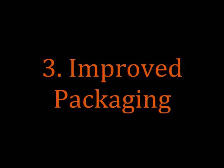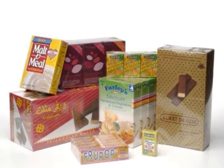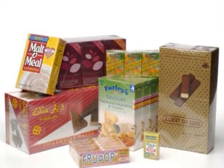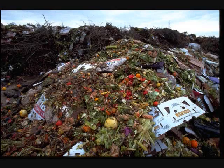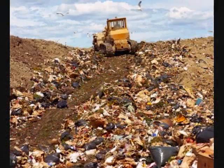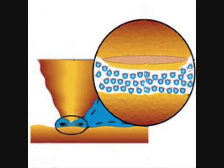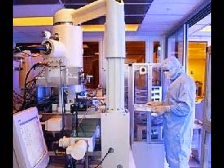Number three: improved packaging. The third way nanotechnology can help us solve global hunger is to improve food packaging. This helps by allowing food to stay viable for a longer period of time and improves aggregate global yields by decreasing aggregate waste. Specific ways this can be done is to improve, through nanotechnology, tensile strength, thermal stability, and detection of biohazards with nanofibers.